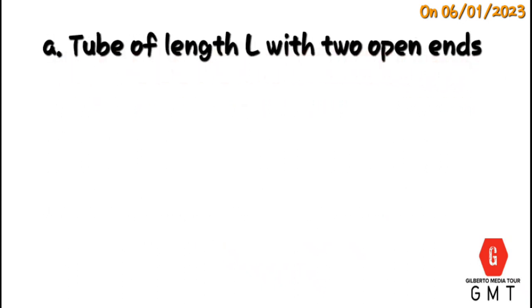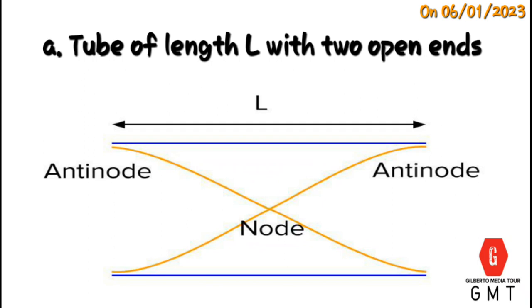A tube of length L with two open ends is a tube which has an antinode at its open end, where a node is taken as closed end.